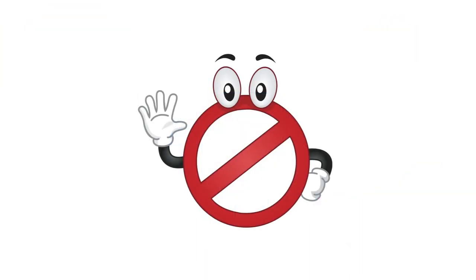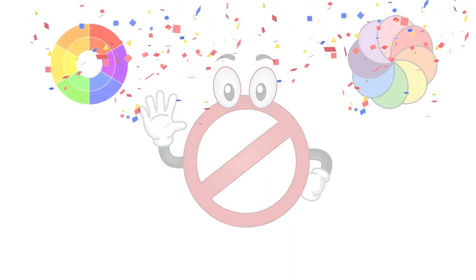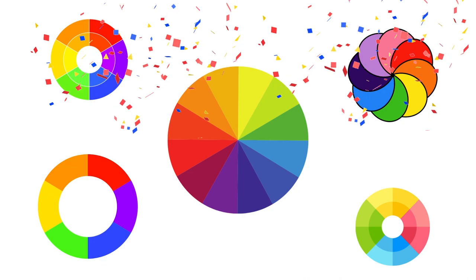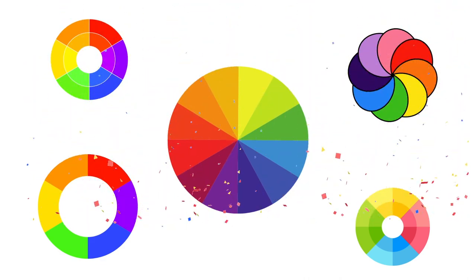Wait, before we go any further, what is a color wheel? A color wheel is a circle with different colored sectors used to show the relationship between colors.